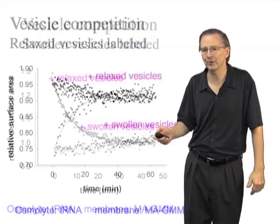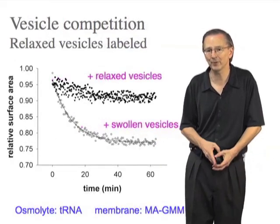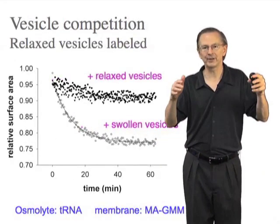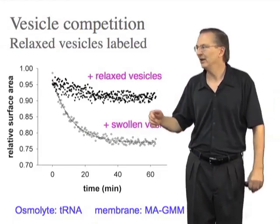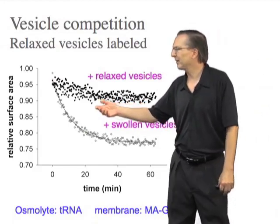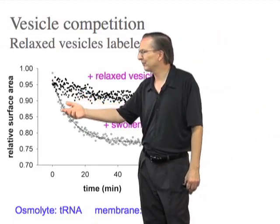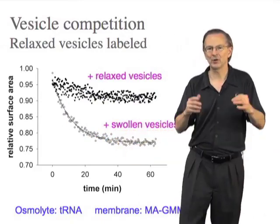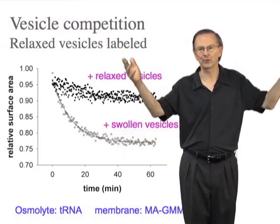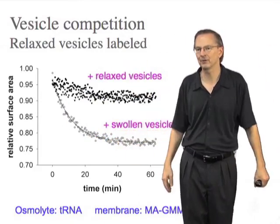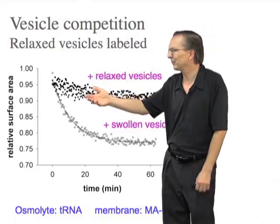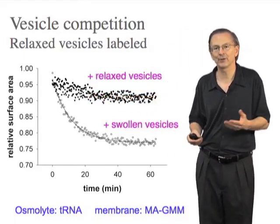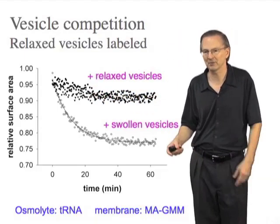We also did the converse experiment, monitoring the surface area of the relaxed vesicles. When they are mixed with swollen vesicles, their surface area declines — molecules are leaving those vesicles and going into the swollen ones. Again, control experiments where relaxed vesicles are mixed with more relaxed vesicles show not much happens.